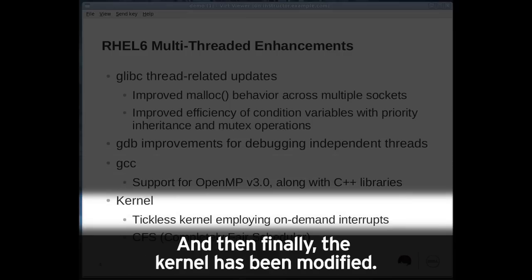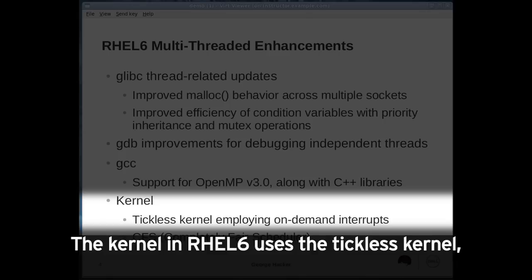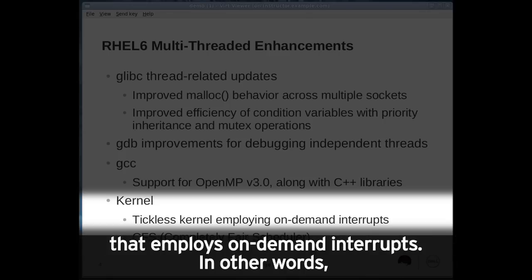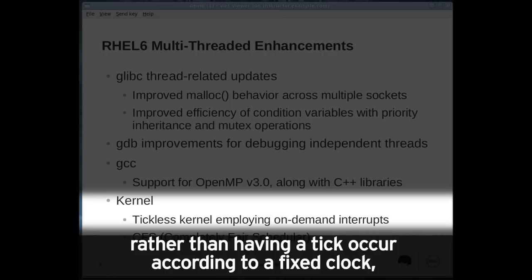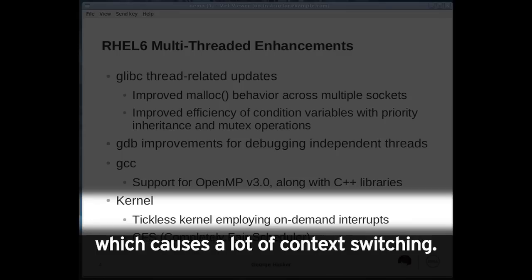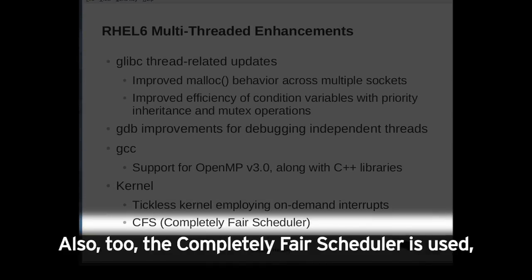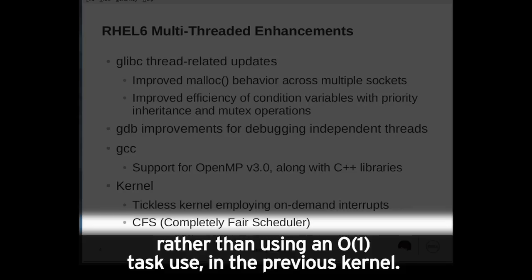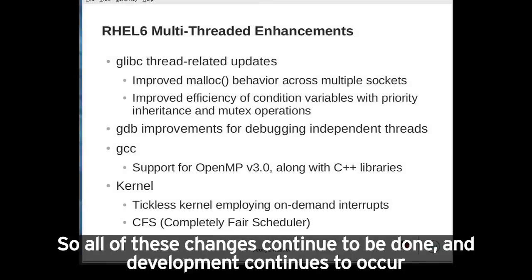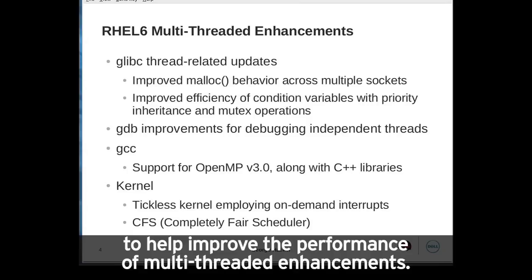Finally, the kernel has been modified. The RHEL 6 kernel uses the tickless kernel that employs on-demand interrupts — when timed events occur, it schedules an interrupt to occur when the timed event is done, rather than having a tick occur according to a fixed clock which causes a lot of context switching. The completely fair scheduler is also used, which uses a scheduling algorithm based on a red-black tree, rather than the order-one task queues used in the previous kernel. All of these changes continue to help improve the performance of multithreaded applications.